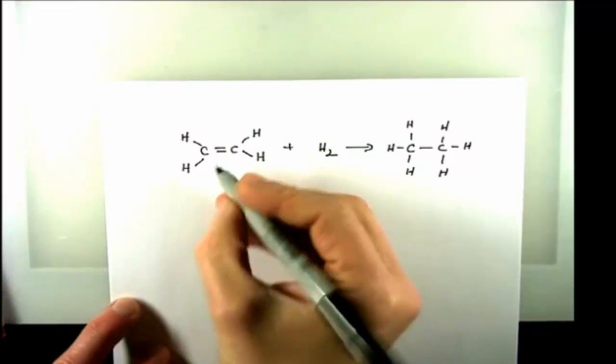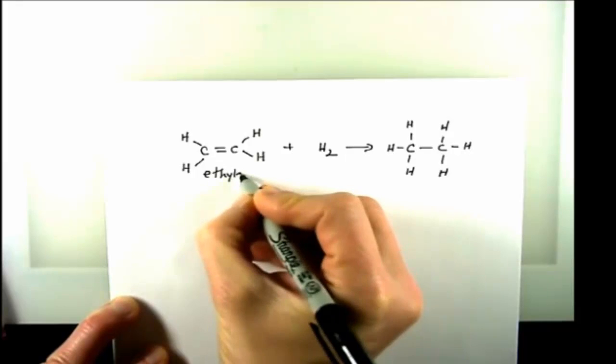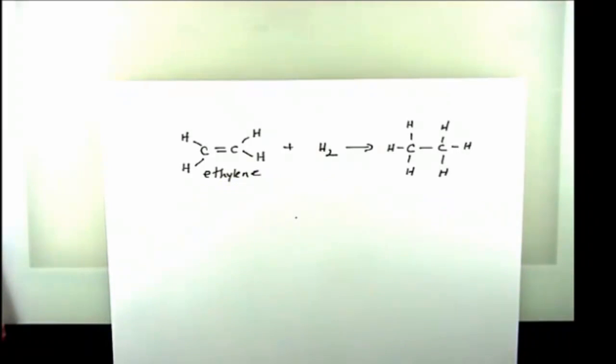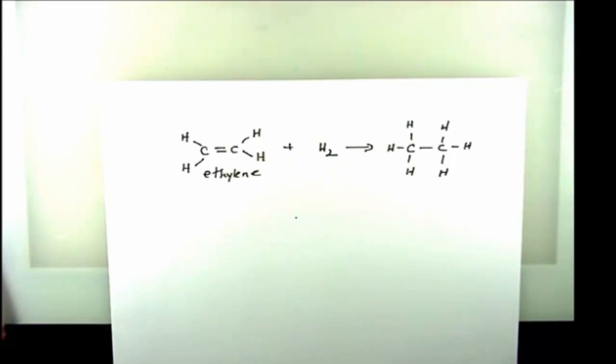If I want to calculate the oxidation number for ethylene here, I want to consider every bond as being potentially an ionic bond. Even though it isn't an ionic bond, I'm just doing this for bookkeeping. I want to look at a bond and say, if this bond could be a polar bond and I could ionize it, where would the electrons go? All I'm asking is which atom in a molecule is more electronegative, which atom is more electropositive.